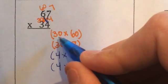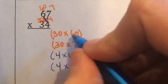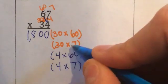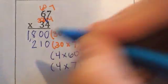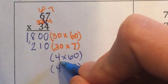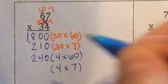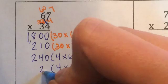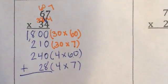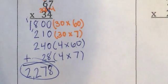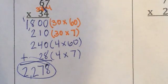Now let's do the multiplication. 30 times 60: I know 3 times 6 is 18, so that's 1800. 30 times 7: 3 times 7 is 21, so that's 210. 4 times 60: 4 times 6 is 24, so that's 240. 4 times 7 is 28. All my numbers are already lined up, so I just add them: 8, then 7+2+4 is 13, write 3 carry 1, 1+1+2+2 is... 2278. Double check to make sure you got the same answer.